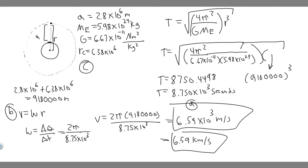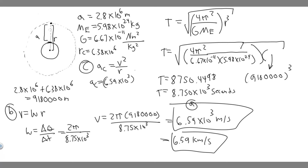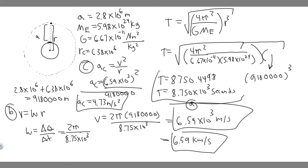For Part C, we're finding the centripetal acceleration of the satellite, which is V squared over R. We plug in the velocity 6.59 times 10 to the 3, square it, then divide by the radius 9,180,000. This gives us a centripetal acceleration of about 4.73 meters per second squared. So your answers are: A — period 8.750 times 10 to the 3 seconds; B — speed 6.59 times 10 to the 3 meters per second; C — acceleration 4.73 meters per second squared.